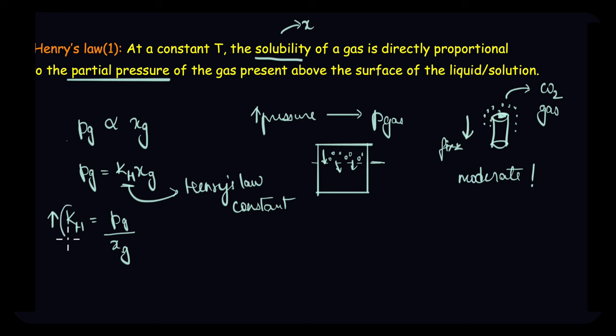It means a gas that has higher value of kh will have lower value of solubility in a particular liquid. Different gases have different values of kh at the same temperature. And this means that kh is also a function of the nature of a particular gas.